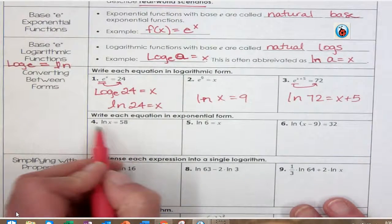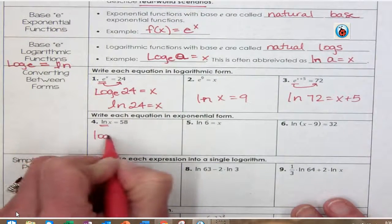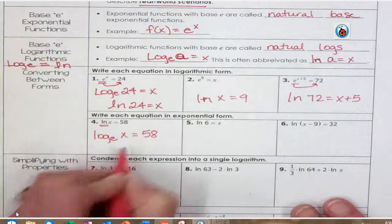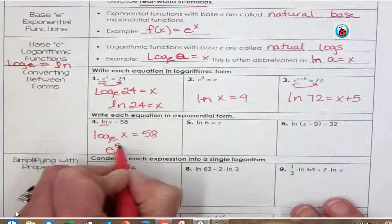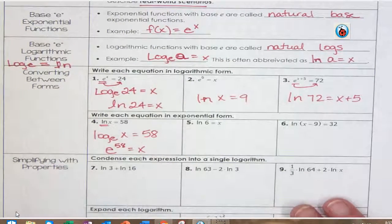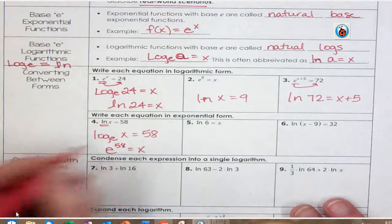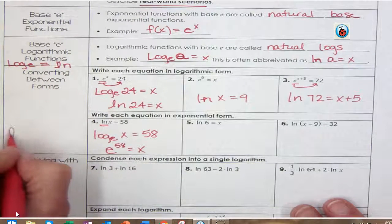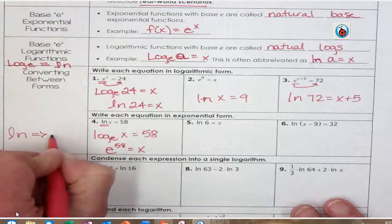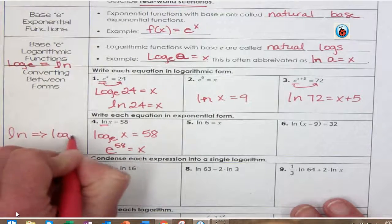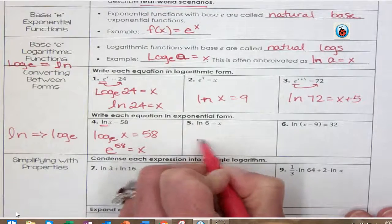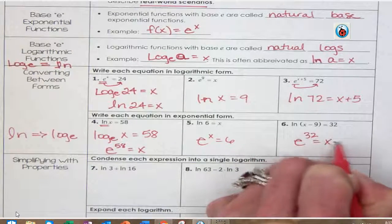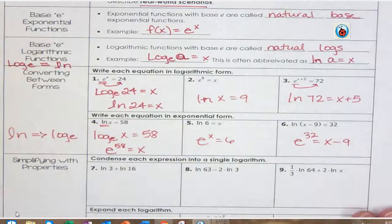Now these same type of thing. Instead of ln, it's going to be log E of X equals 58. So you take your E base raised to the 58th power, E^58 equals X. You just have to keep in mind that whenever you have log base E, it's the same as ln, and whenever you have ln, the base is going to be log E. So here you've got E^x equals 6 and E^32 equals X minus 9.